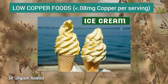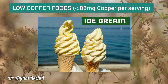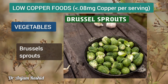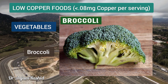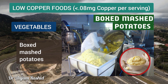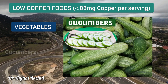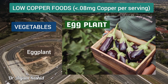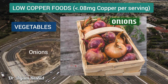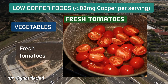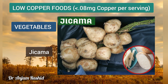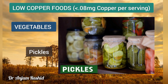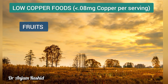Low copper foods contain less than 0.08 milligrams per serving and can be taken freely. Low copper vegetables include most vegetables such as Brussels sprouts, broccoli, bok choy, boxed mashed potatoes, carrots, cabbage, cucumbers, cauliflower, collard greens, green beans, eggplant, lettuce, onions, green peppers, fresh tomatoes, fresh spinach, jicama, mixed frozen vegetables, shiitake mushrooms, enoki mushrooms, pickles, and ginger.